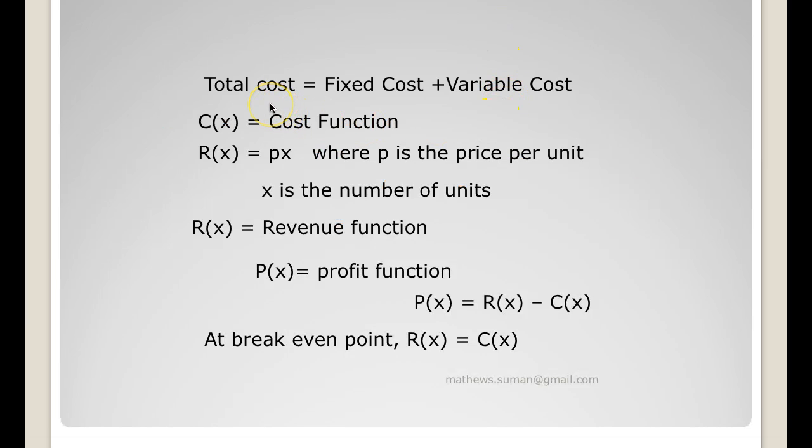Coming to certain terms: total cost equals fixed cost plus variable cost, where C(x) is the cost function. R(x) is the revenue function which is px where p is the price per unit, x is the number of units. P(x) is the profit function and profit function is revenue minus cost. So at breakeven point, revenue equals cost or R(x) equals C(x).